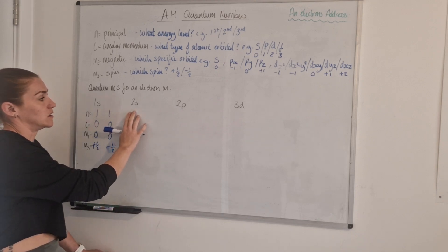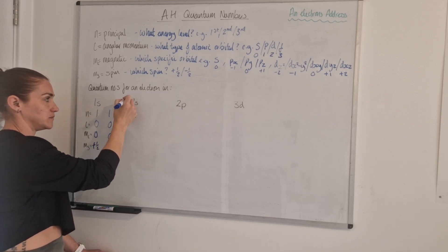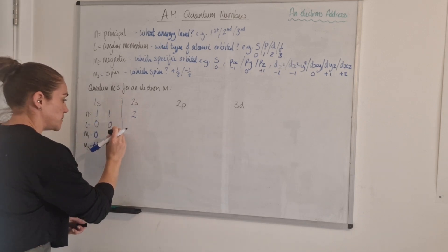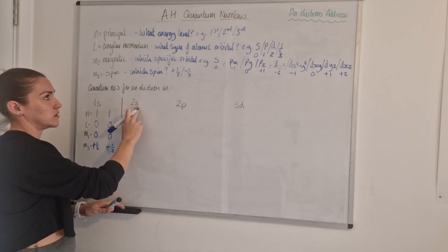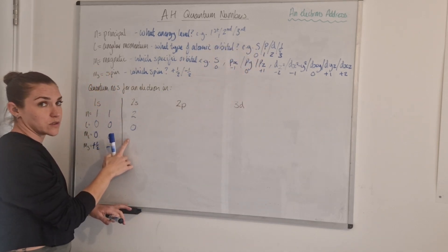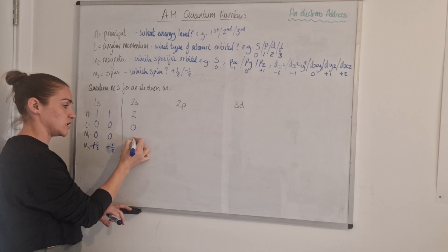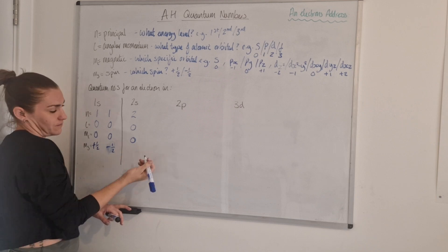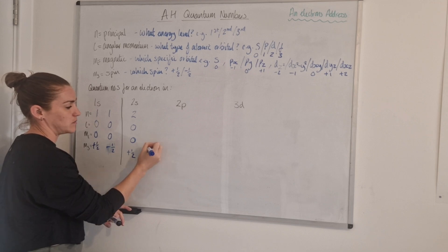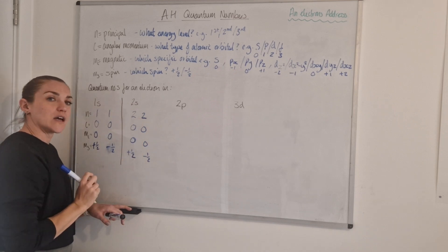For the 2s orbital: the principal quantum number is 2 because it's in the second energy level. It's in an s orbital, so l is 0. There's only ever one type of s orbital, so ml is also 0. And for the spin, you just get to pick — plus a half or minus a half — giving the two possible sets of quantum numbers for the two electrons that can occupy this orbital.